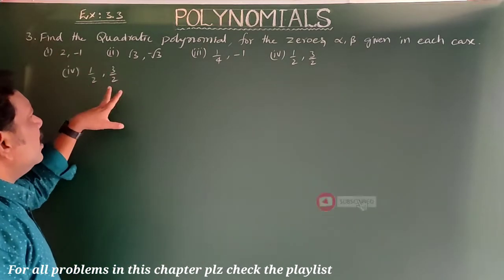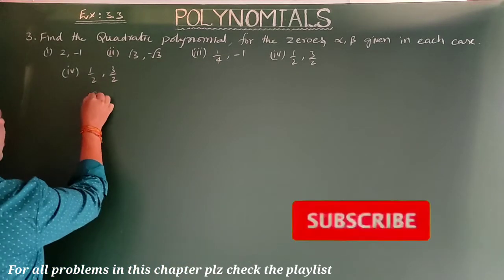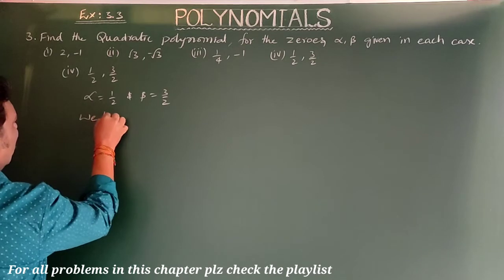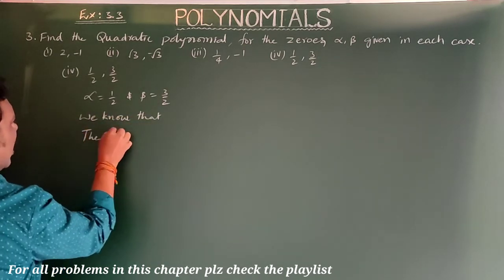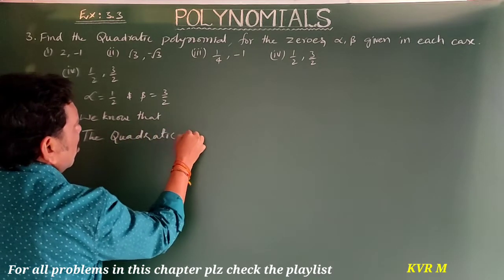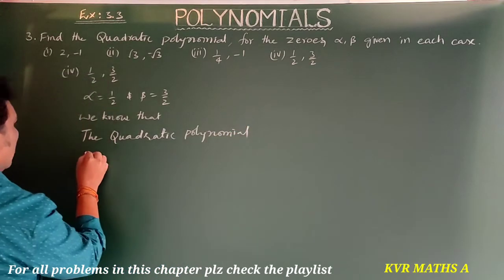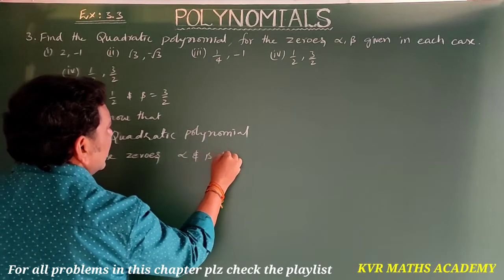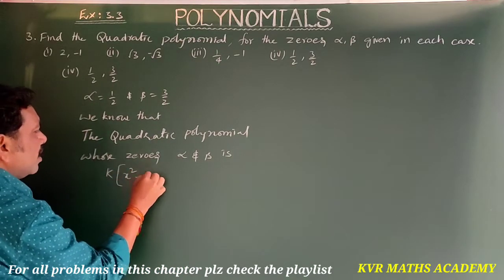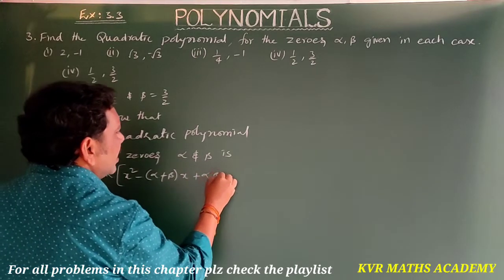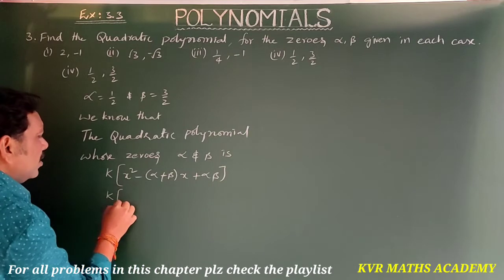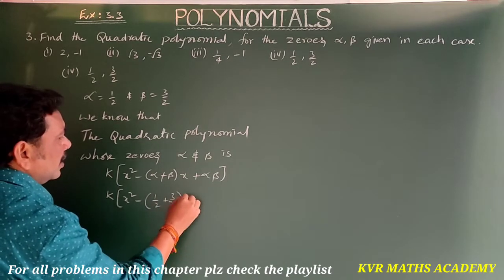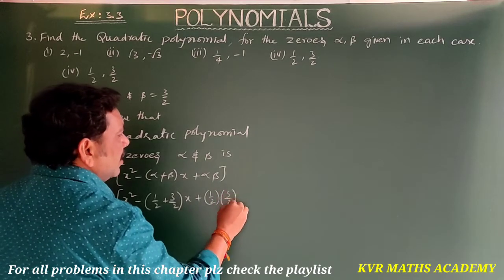The final sub-part of question 3: alpha = 1/2 and beta = 3/2 are given. Substituting into the formula: k into x² minus (1/2 + 3/2)x + (1/2)(3/2). Here 1/2 + 3/2 = 4/2 = 2, and (1/2)(3/2) = 3/4.